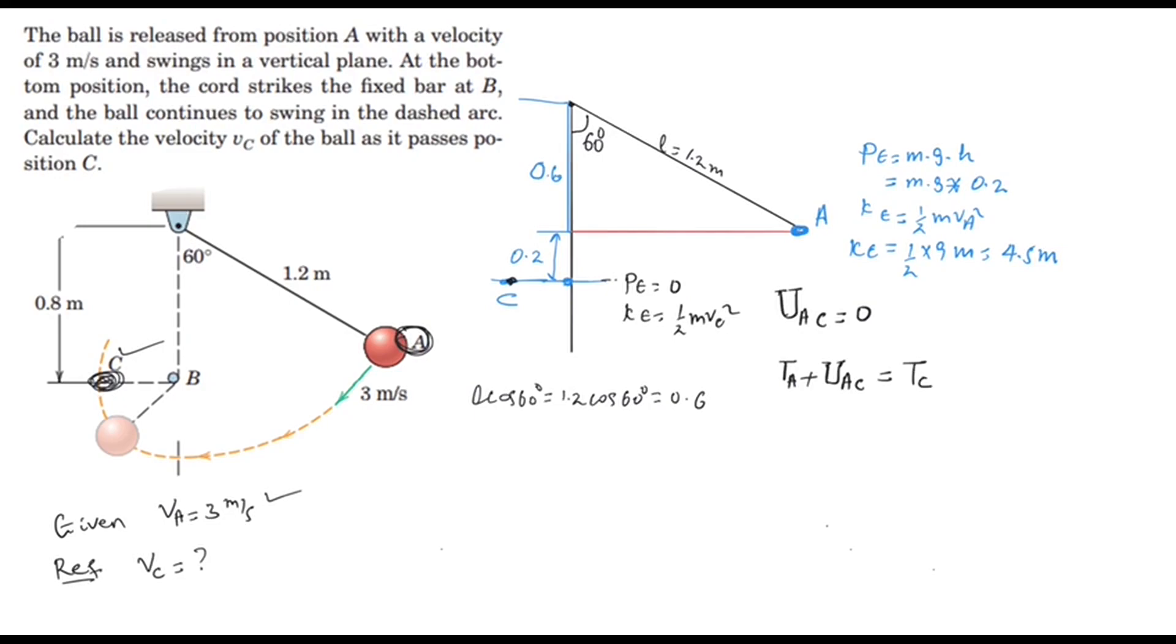If we put all these values, we'll get 0.2 times MG plus 4.5 times M equals the energy at point C.